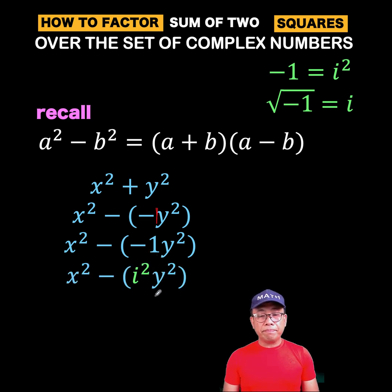Now, applying the power of a product, we can now write this as x squared minus the quantity i y raised to the second. Now, it doesn't matter whether we write i first or y first, but when there are radicals, it's easier to write the imaginary unit i first so that you will not confuse it as being part of the radical. But here, there is no problem. You can interchange i and y.